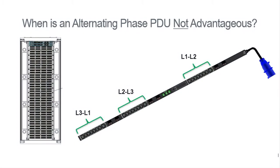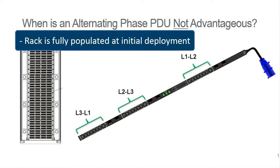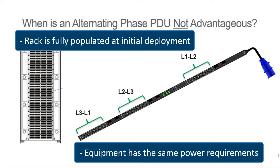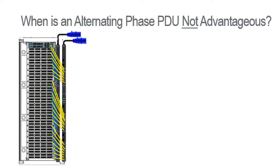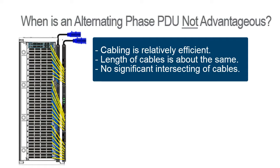Alternating-phase PDUs do cost more, and there's no advantage in paying more if you really don't need this type of PDU. So when don't you need an alternating-phase PDU? For example, if an equipment rack is fully populated at initial deployment and all equipment has equal power requirements, a conventional PDU is probably right for you. With a fully populated rack of similar equipment at initial deployment, the resulting cabling is relatively efficient.